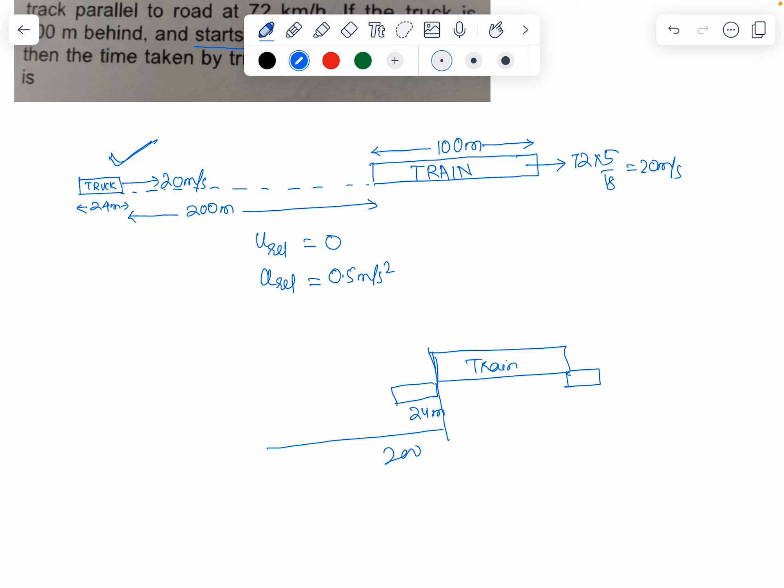The length of the truck is 24 meters and the length of the train is 100 meters, so the total relative distance is 200 plus 100 plus 24, which equals 324 meters.